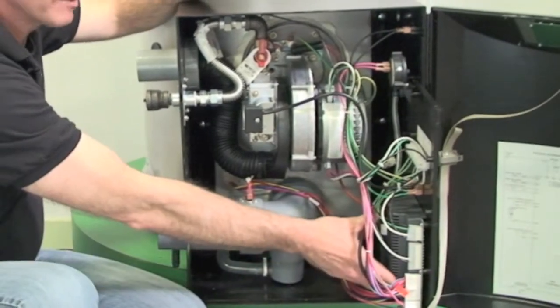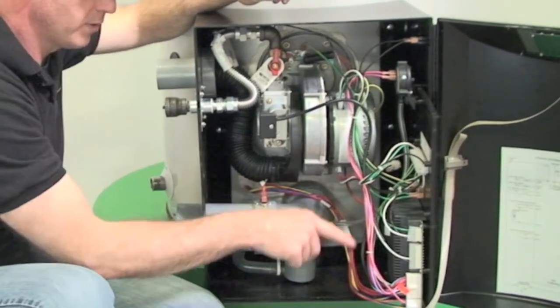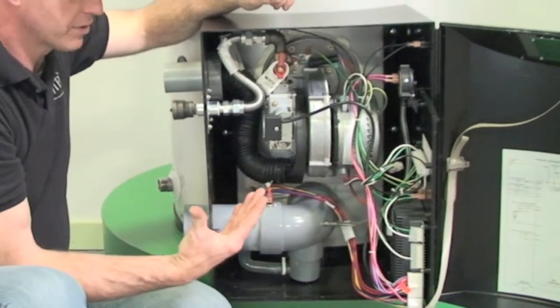This is our main control board. This is the brains behind the operation. As you can see, if it needed to come out, we simply slide this out, pull out the five screws, and we have the control board.